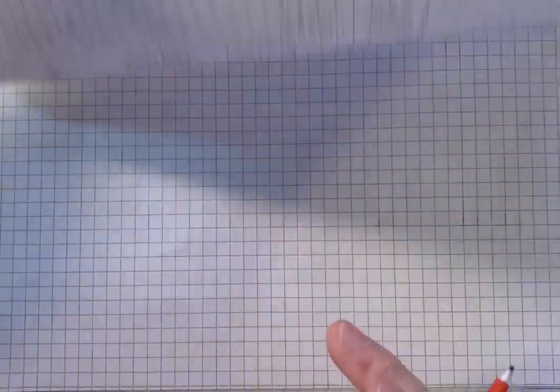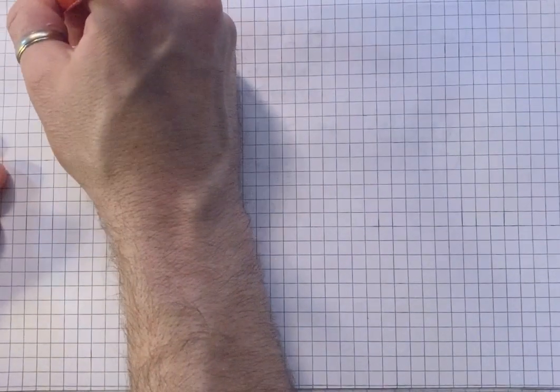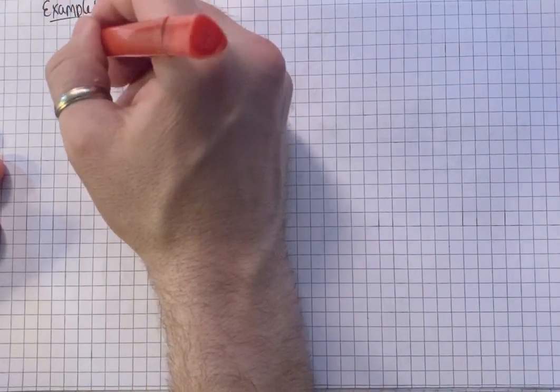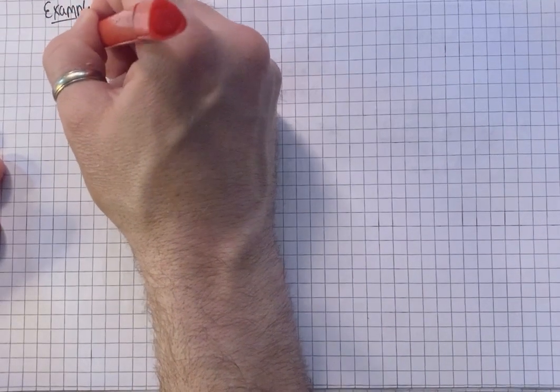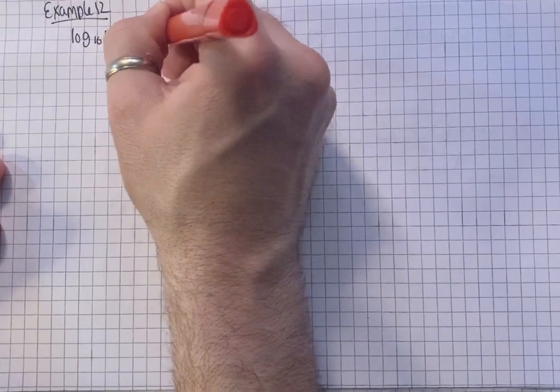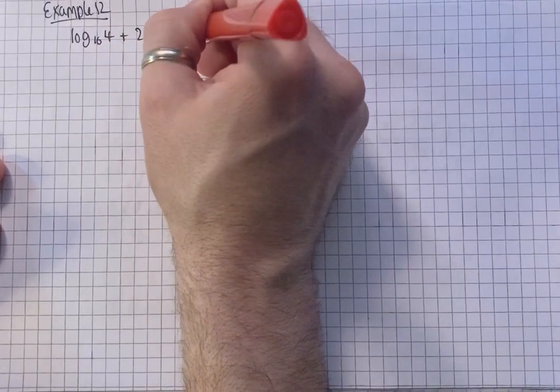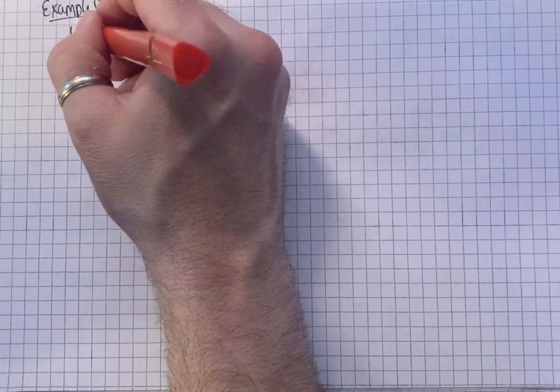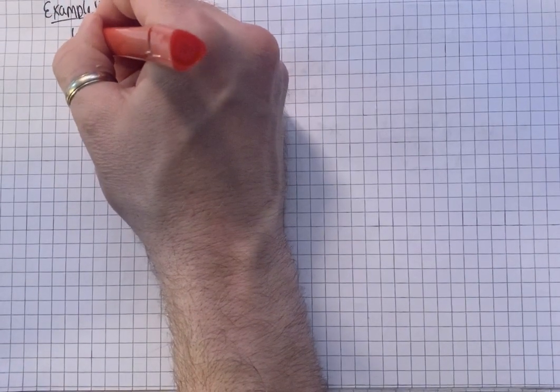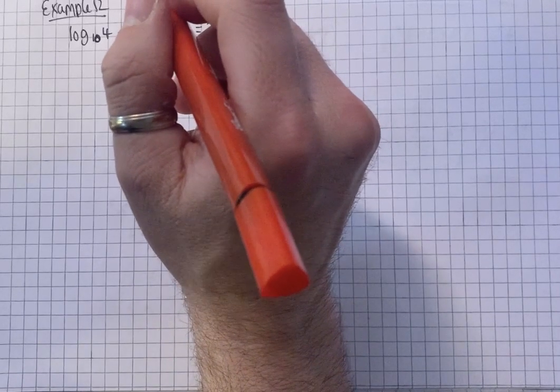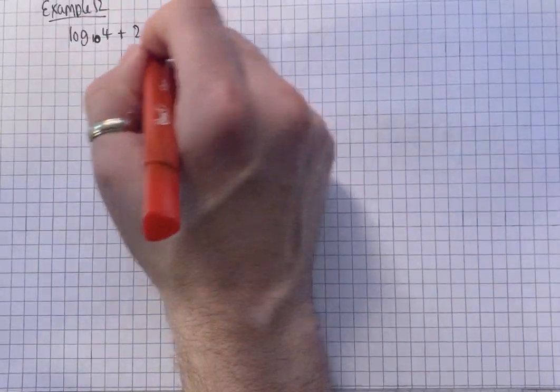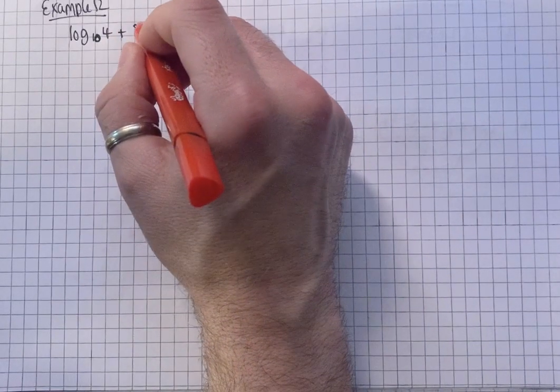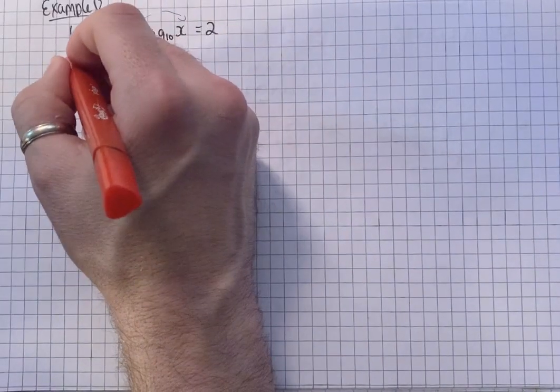Okay. Example 12. So we've got the equation log to the base 10 of 4, plus 2 log to the base 10 of x, equals 2. So when trying to solve an equation involving logs, you really want to try to create a single logarithm first. So try to combine them. So what I'm going to need to do first, before I combine them using the multiplication rule, is bring this 2 up as a power, so then they both start off with log.